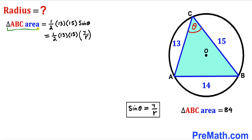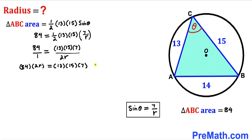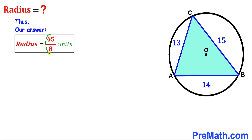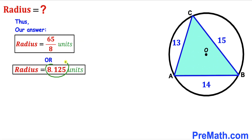Substituting the area as 84 on the left-hand side, we have: 84 = (13 × 15 × 7) / (2r). Cross-multiplying and dividing both sides by 84 × 2, the 84s and 2s cancel. Simplifying the right side gives us r = 65/8. So the radius of this circle is 65/8 units, which equals 8.125 units.